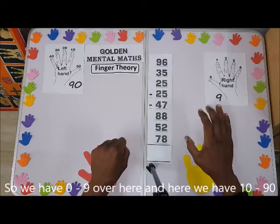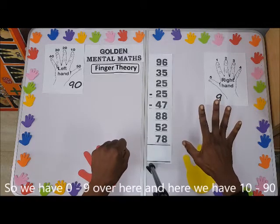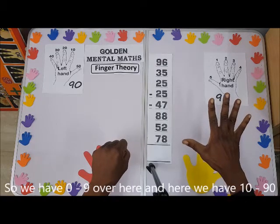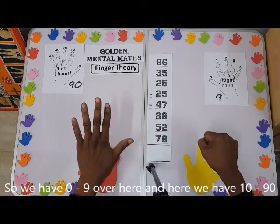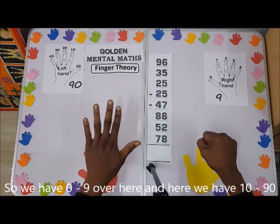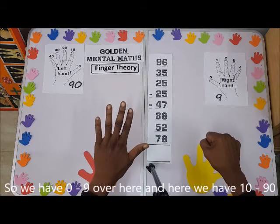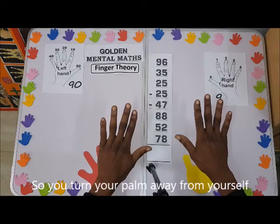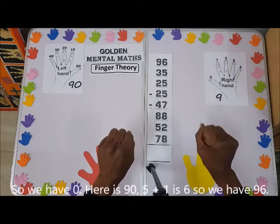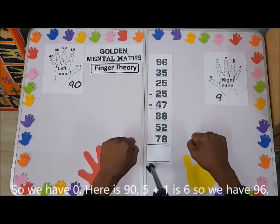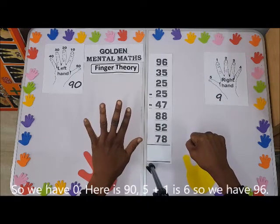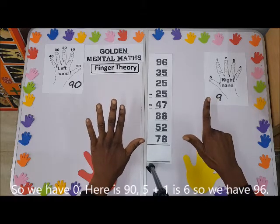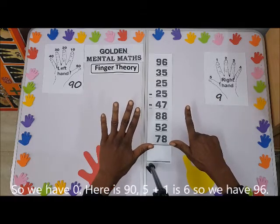We have zero to nine on the left hand, and on the right hand we have 10 to 90. You turn your palm away from yourself. So we have 90 here, and 5 plus 1 is 6, so we have 96.